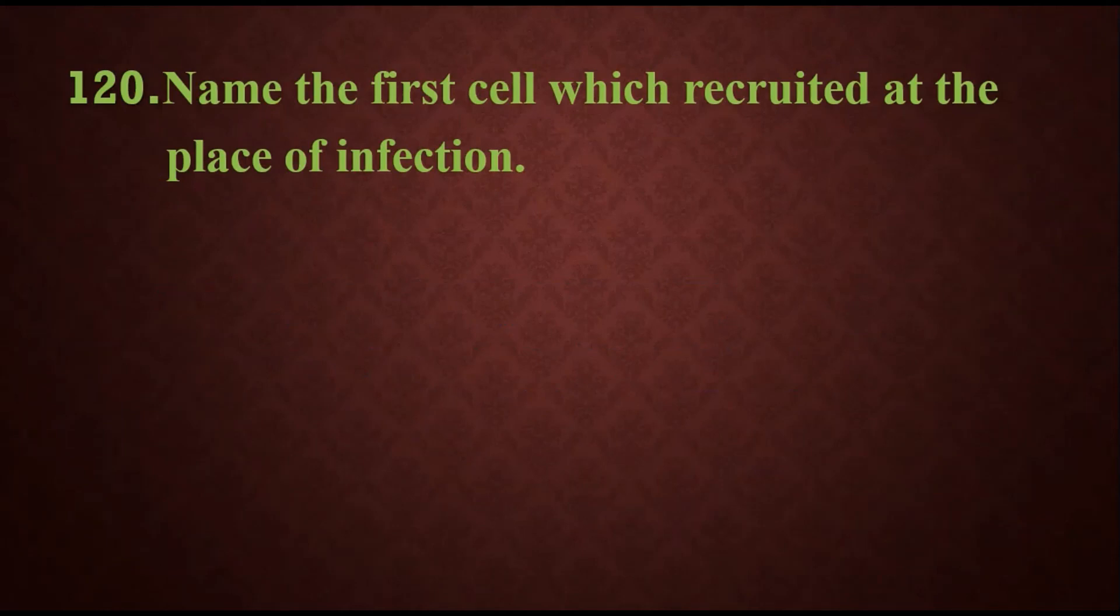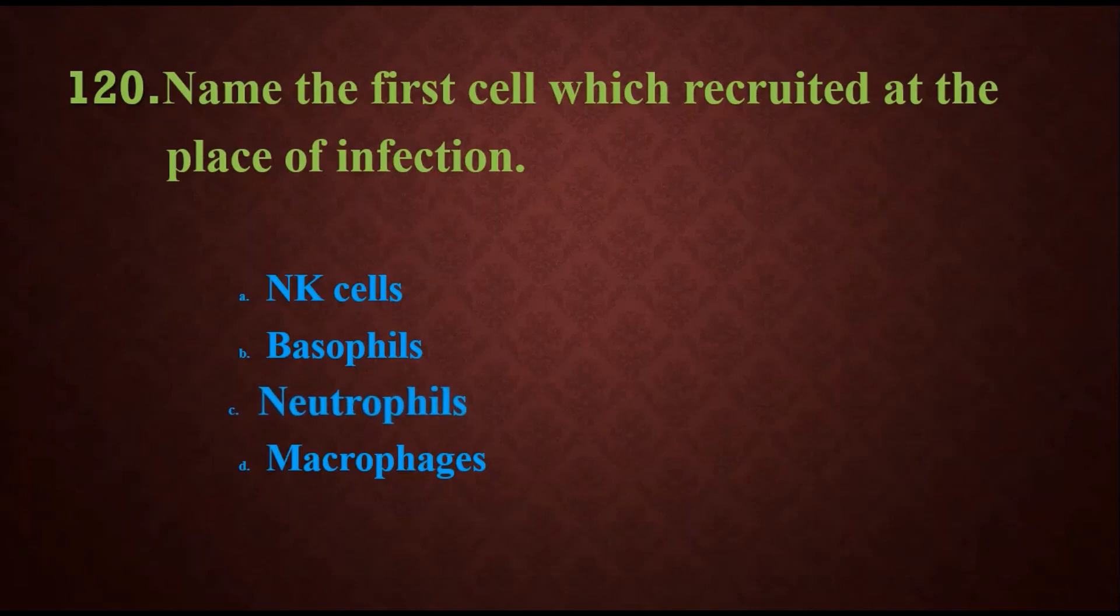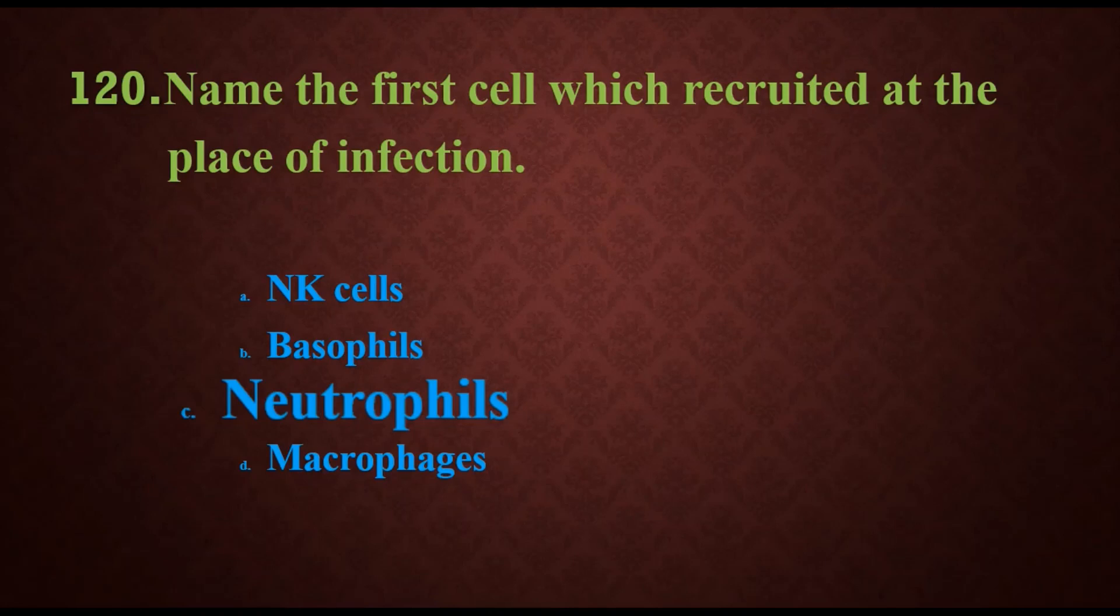Question 120: Name the fastest cell which is recruited at the place of infection. Options are natural killer cells, basophils, neutrophils, or macrophages. Obviously, the answer is neutrophils, which are the fastest cells recruited at the place of infection. That's about series 6. In series 7, we will go with the questions from 121 to 140.